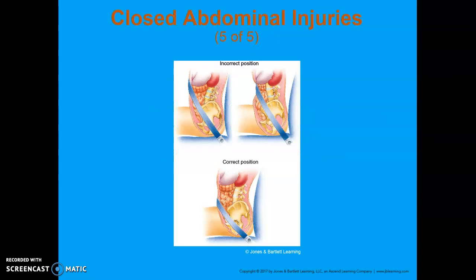The top image shows the belt positioned too high — it won't disperse any energy to the bones and puts the brunt of the force on the abdominal organs. The bottom image shows correct placement where the energy is dispersed through the bone.